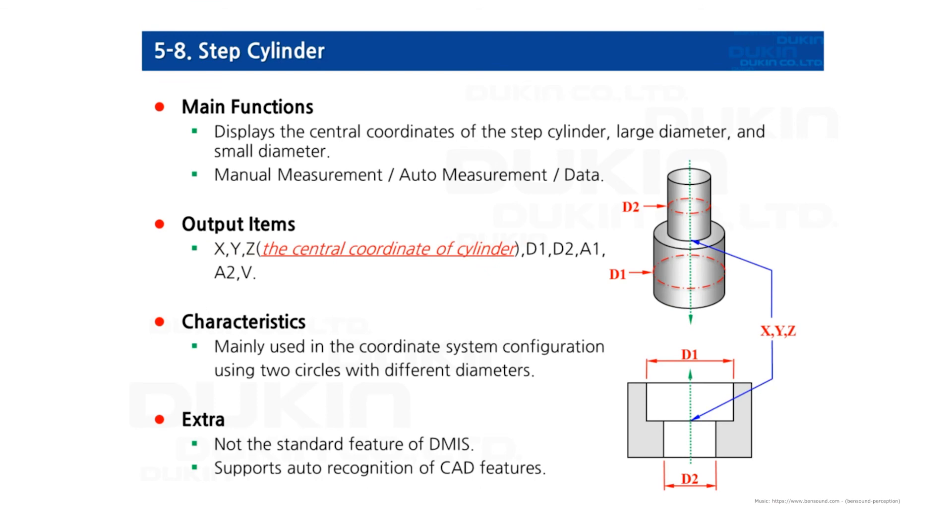And for the last, step cylinder. The minimum measuring points required of measuring a step cylinder is eight points, and measures two different circles. It outputs X, Y, Z on the center of the step cylinder. And D1, D2 stands for those two different circles' diameters. And also A1 and A2 for the axis.